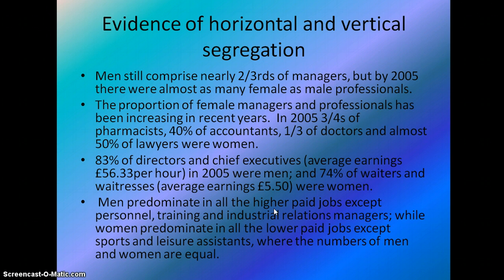Looking at evidence of horizontal and vertical segregation: men and women are not equally represented through the occupational structure. Women are often employed in what we call the five C's — caring, cashiering, catering, cleaning and clerical occupations — while men are employed in a wider range of occupations. Women predominate in health and social work, education, hotels and restaurants, while men predominate in construction, transport, storage, communication and manufacturing. Men predominate in manual occupations particularly in skilled trades, whereas women predominate in personal service, administrative, secretarial, and sales and customer service roles.